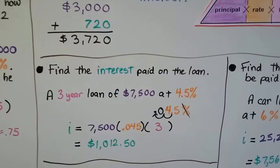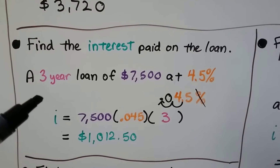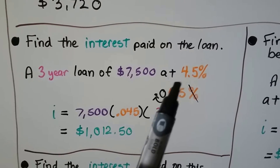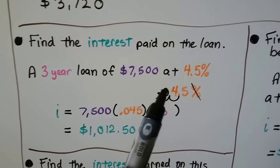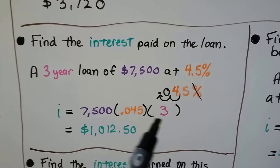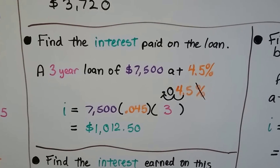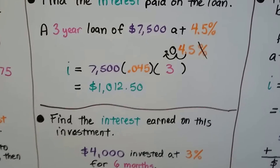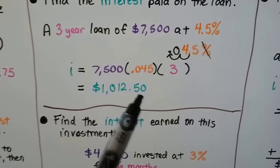Find the interest paid on a three-year loan of $7,500 at 4.5%. We need to change 4.5% to a decimal — we go two hops to the left, add a zero as a placeholder, and remove the percentage sign, giving us 0.045. We multiply $7,500 times 0.045 times 3 years and get $1,012.50. Remember this is money, so there should be a dollar sign, and if you end up with three digits after the decimal point, round to two.